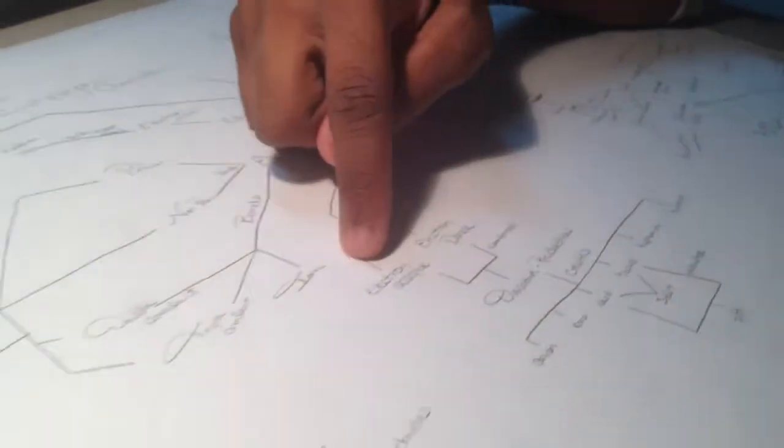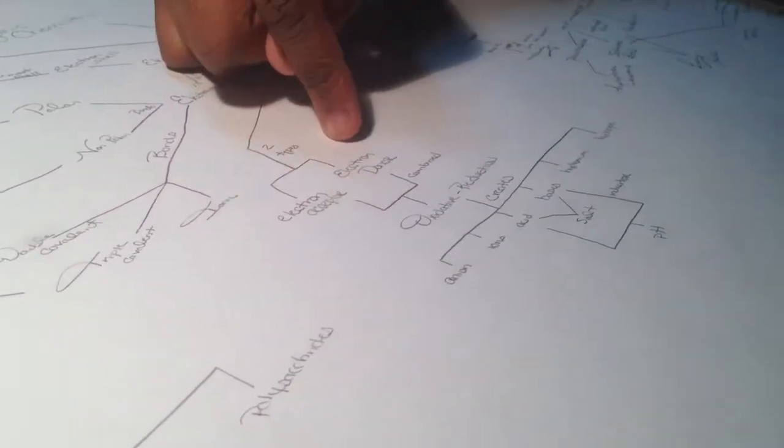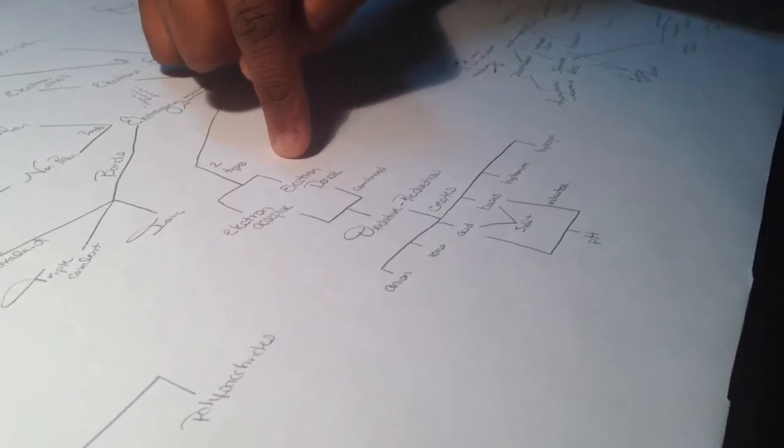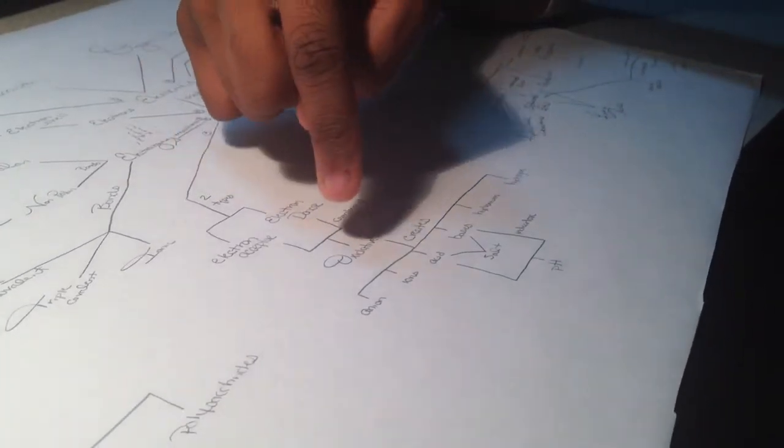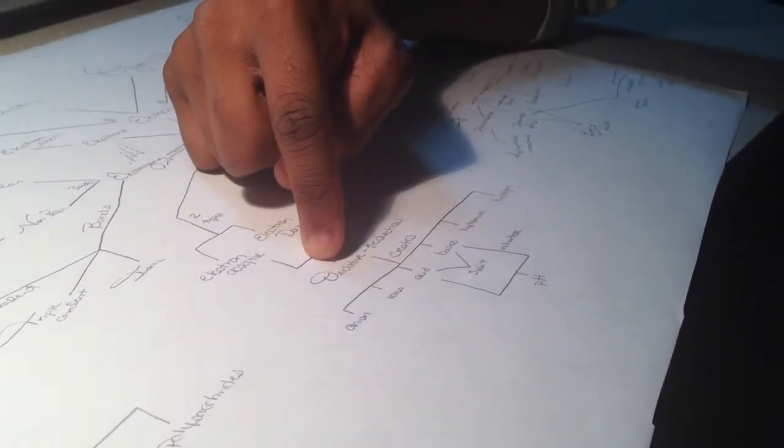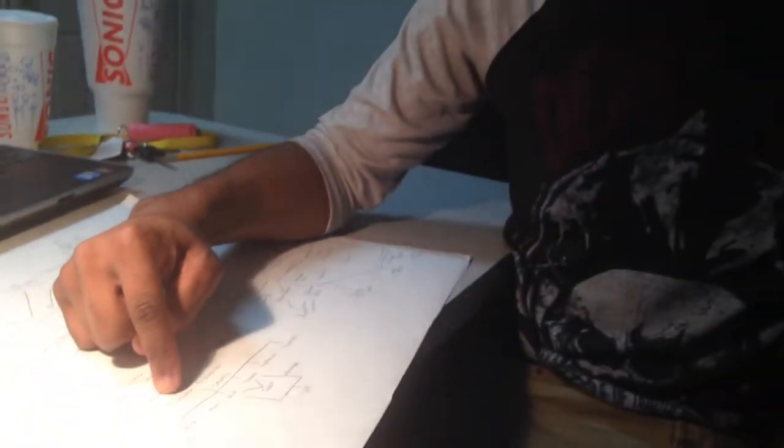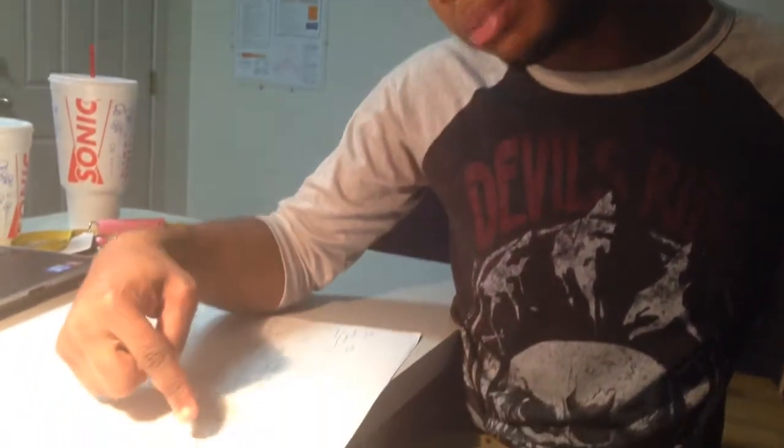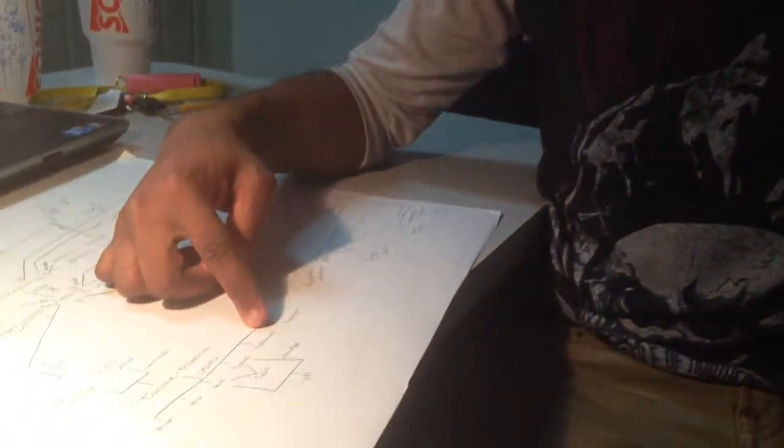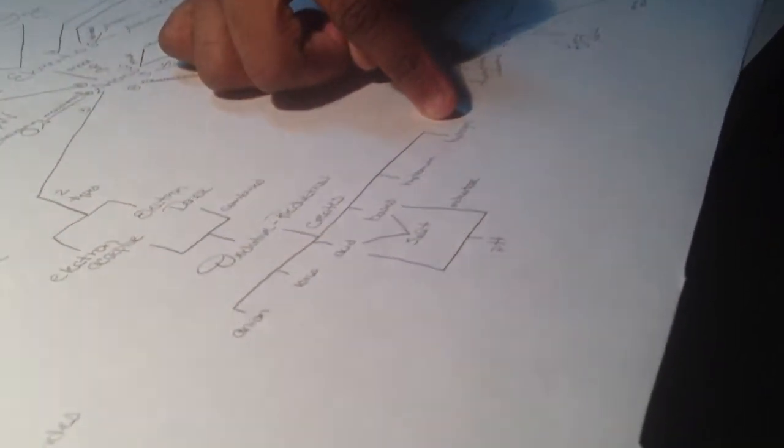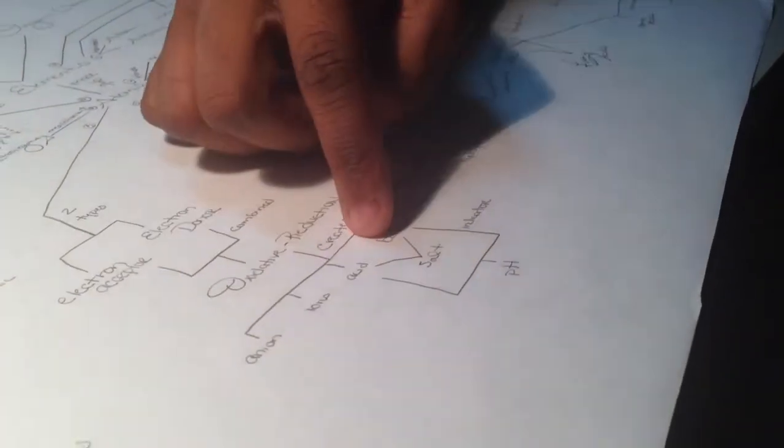There's two types of atoms: electron acceptors and electron donors. When those two are combined they make the oxidative and reduction reactions. From those two reactions you get anions, ions, acids, bases, hydronium ions, and hydrogen ions.